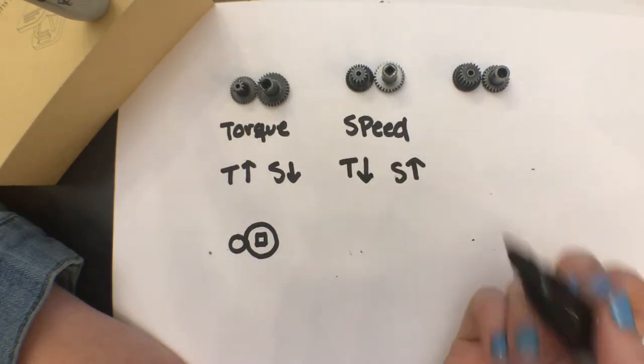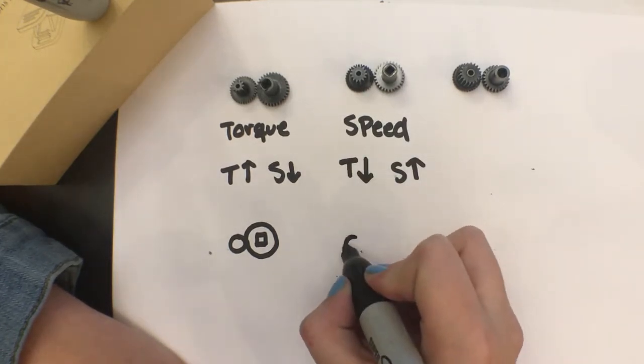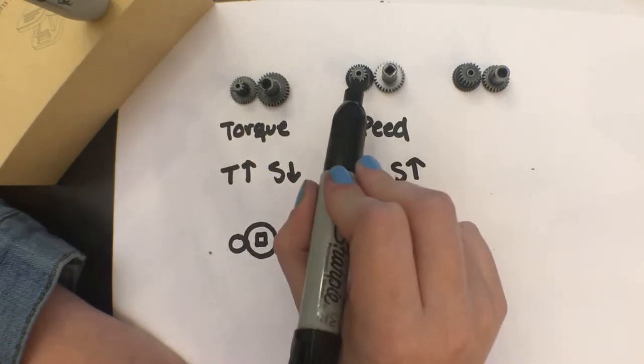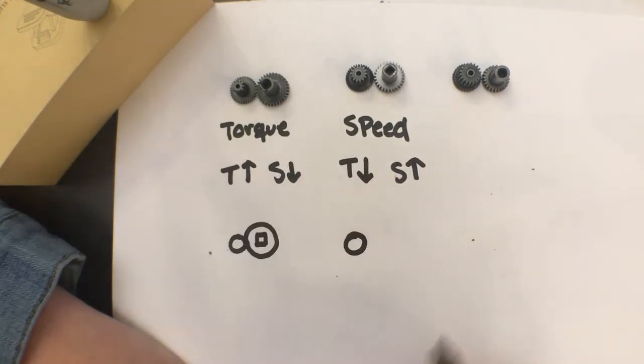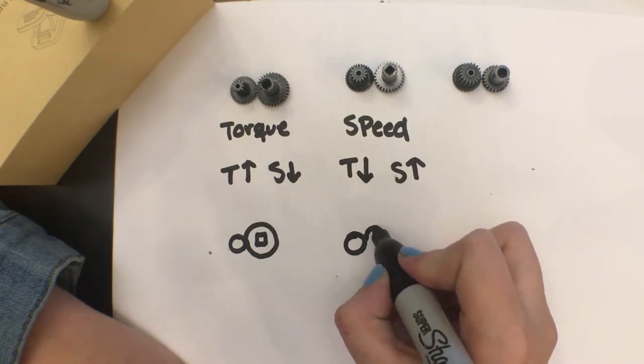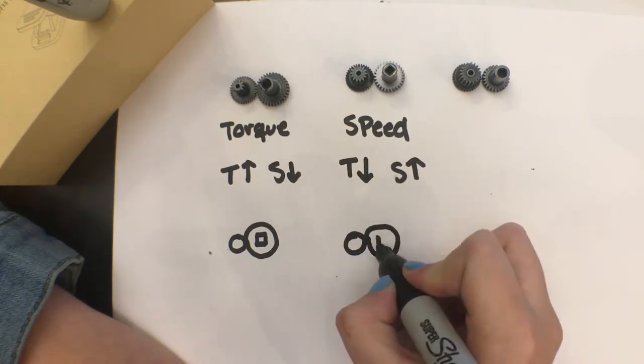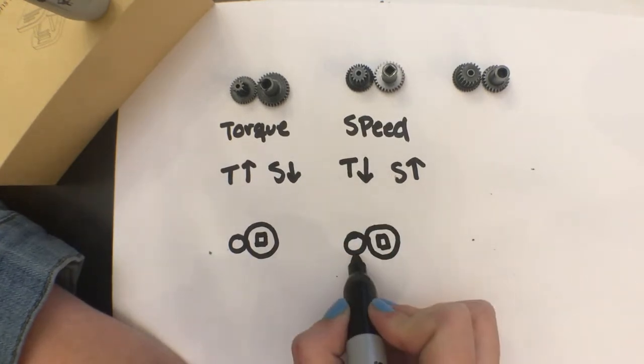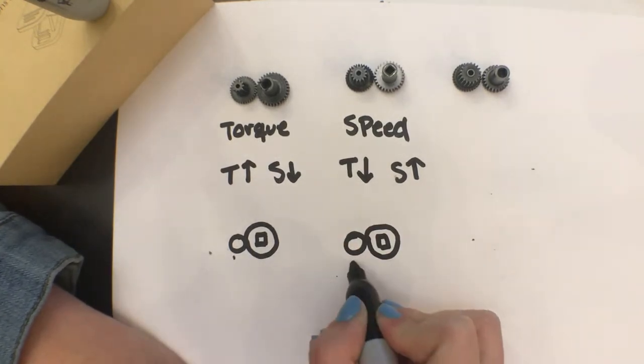You can tell these are speed gears because the input gear is slightly larger than on the torque. You guys see that right there, it is a little bit larger. The output gear is still bigger than the input but because this one is bigger than the torque ones, you know these are speed.